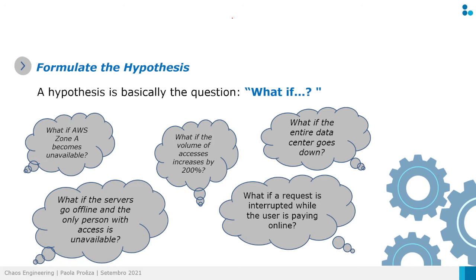The hypotheses can be things like: what if an API becomes unavailable? What if the volume of access increases? What if the entire data center goes down? What if a request is interrupted while the user is paying online? What if the servers go offline and the only person with access is unavailable? We can see that the hypothesis is not only about hardware, connection, or architecture.